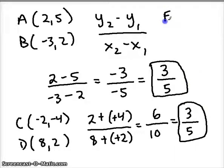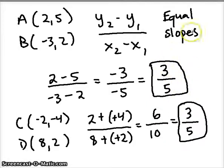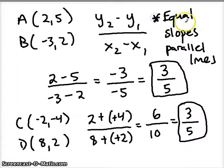So what can we tell about the relationship of parallel lines? They have equal slopes. Whenever you have to find whether two lines are parallel, compare their slopes. If they're equal after you reduce and simplify, then they are in fact parallel lines. Equal slopes means parallel lines — know that relationship.